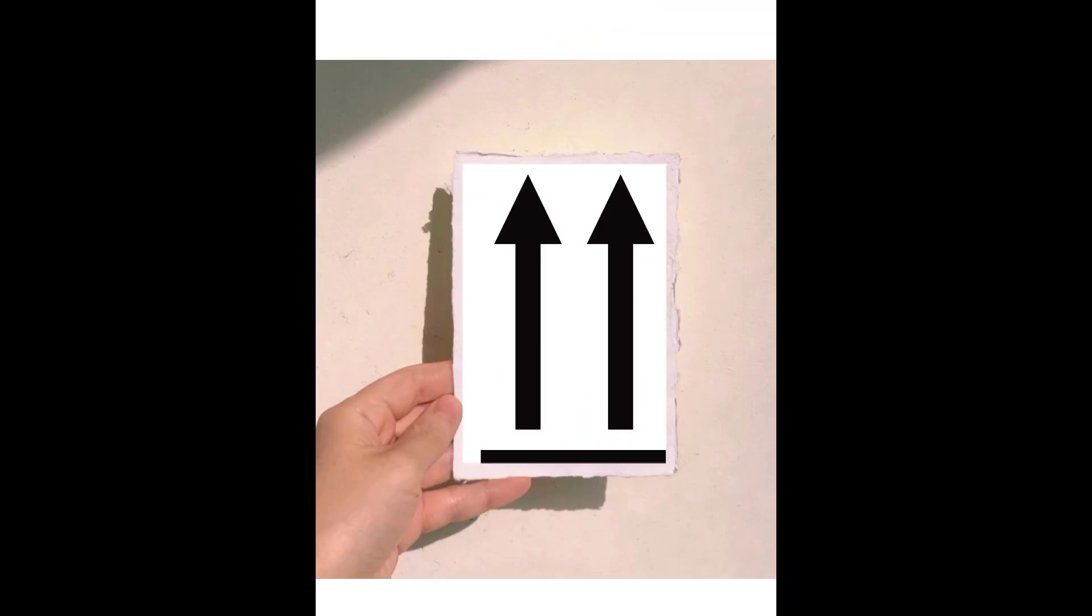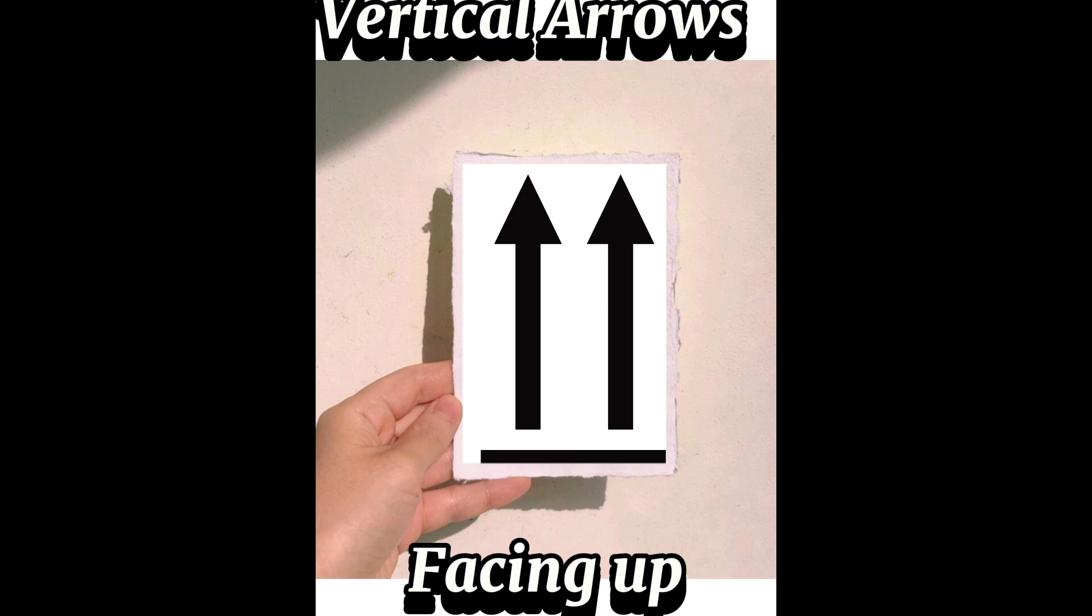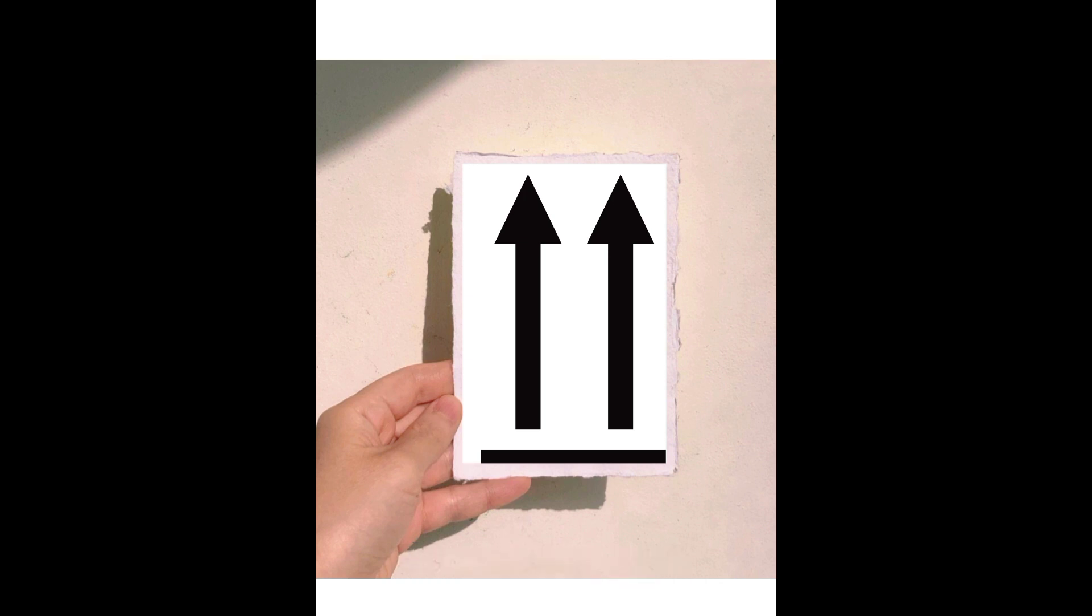Coming in at number 4 is a horizontal line with two vertical arrows pointing upward. This common packaging symbol indicates the package contains a product that must be placed upright at all costs. It shows strictly this side up.